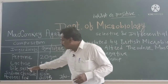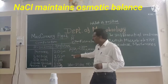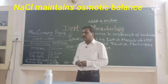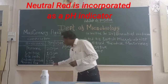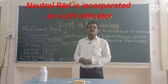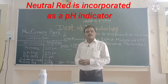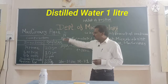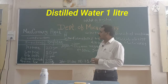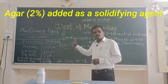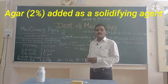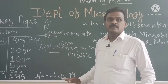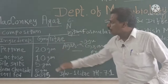Another ingredient is sodium chloride, which is added to the medium to maintain osmotic balance. Neutral red is the pH indicator, also incorporated into the medium, making it a differential medium. All these ingredients are added into 1 litre of distilled water, then agar is added at 2% — that is 20 grams per litre — and the final pH of the medium is adjusted to 7.1.